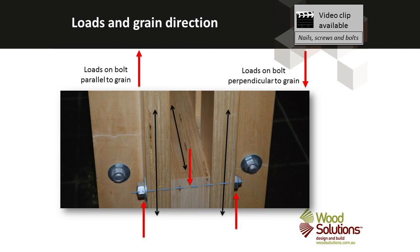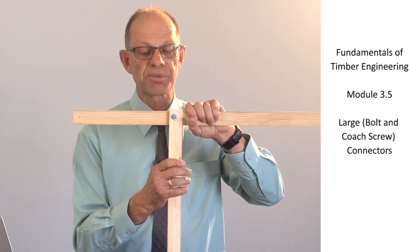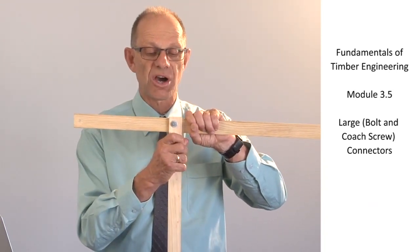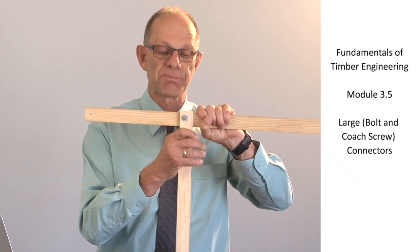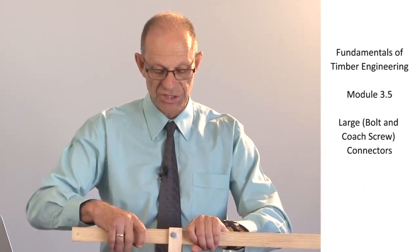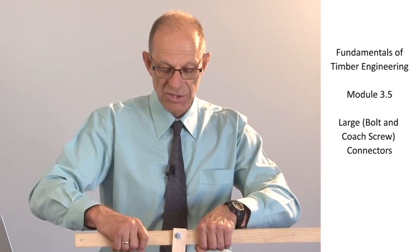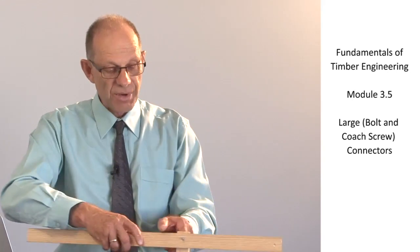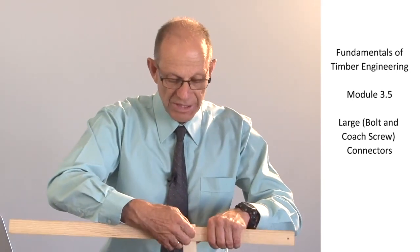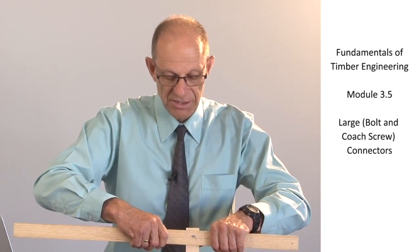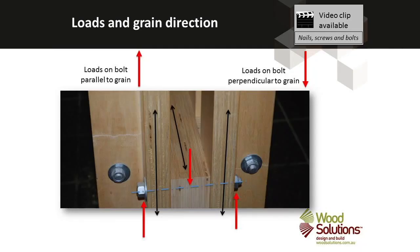The capacity of a bolt depends on the relationship of the force to the grain direction. So if the load is applied parallel to the grain, the bolt has a higher capacity than if the load is applied perpendicular to grain. In this connection here, if I push down on the horizontal member, the load is applied to the vertical member parallel to the grain and to the horizontal member perpendicular to the grain. So as I push down, the bolt is pushing up on the piece of timber and loading it perpendicular to the grain. There is a video clip available that indicates why the bolt has different capacities in those directions. But load direction is very important for the capacity of bolted joints.